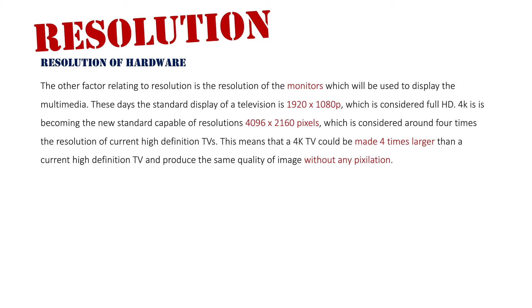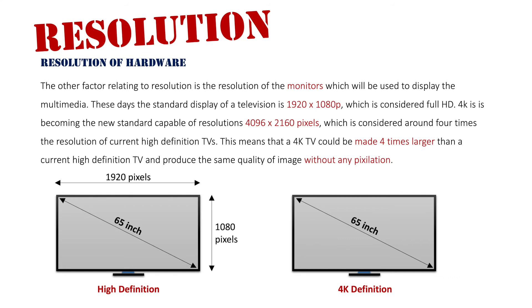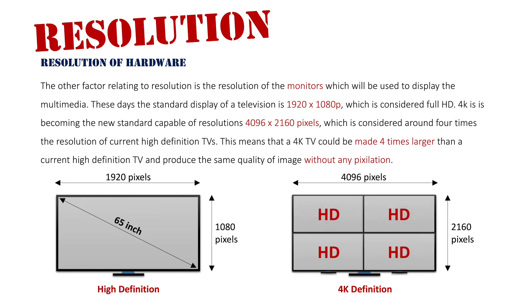This means a 4K TV could be made four times larger than a current HD TV but produce the same image quality without any pixelation. For example, here are two 65-inch TVs — one HD and one 4K — the exact same physical size, but with different pixel counts. HD gives us 1920 by 1080 pixels, while 4K gives us 4096 by 2160 pixels. The 4K screen is essentially equivalent to four HD TVs — twice as many pixels horizontally and vertically — producing much sharper images and allowing much larger 4K TVs without any loss to quality.